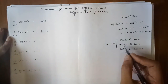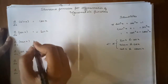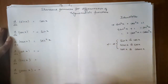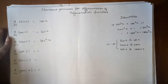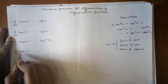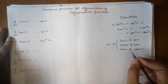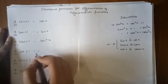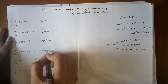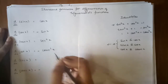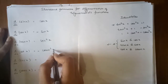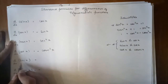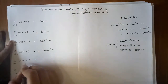Differentiation of tan x: as we can see there is a relation between tan x and sec x, so the answer becomes sec²x. Similarly, the differentiation of cot x — as there is a relation between cot x and cosec x — the answer will be minus cosec²x.